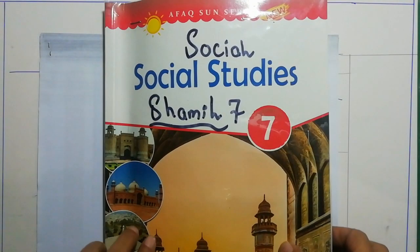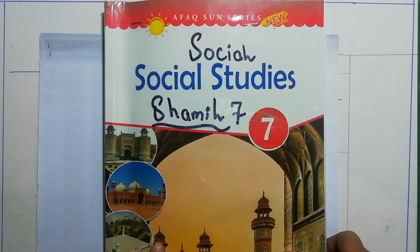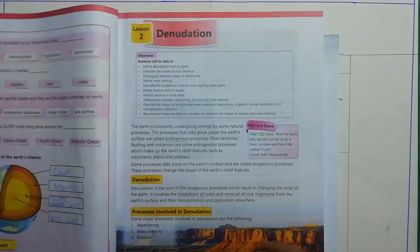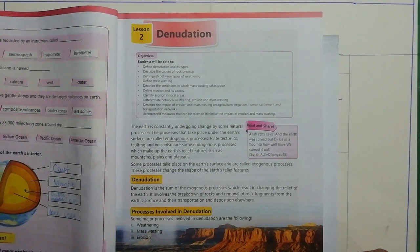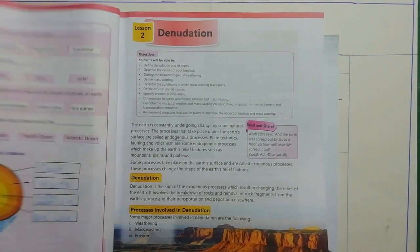Assalamu alaikum. I was teaching one of the lessons of social studies to my son Shamil Faroob, and I thought I should share it with you all also. So let's start learning with me. It's a social studies Grade 7 book, and it's lesson number two: Denudation. Today we'll learn about this.